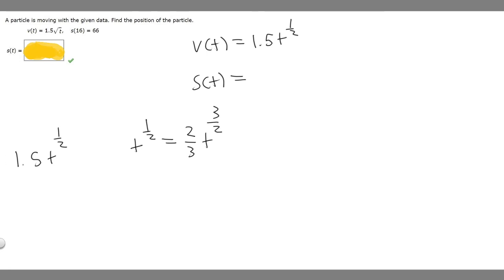Then we're multiplying by 1.5. So if we multiply this by 1.5, 2 times 1.5 is going to be 3. So this is going to be equal to 3/3 times t to the 3/2. So this just cancels and becomes 1. So this is just t to the 3/2.